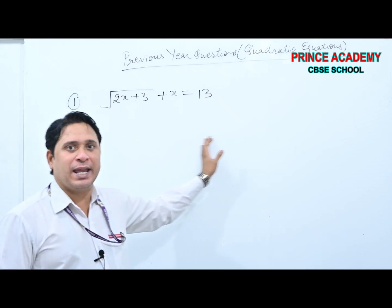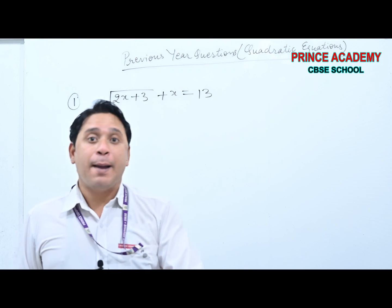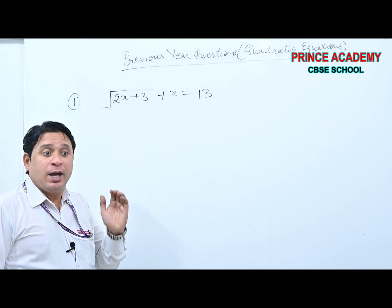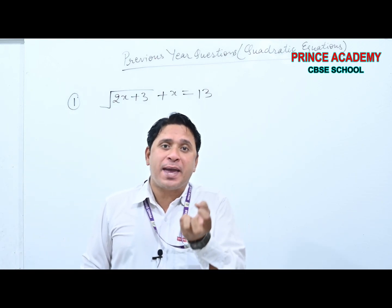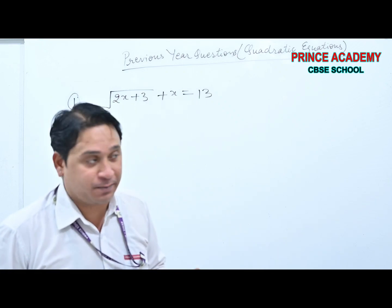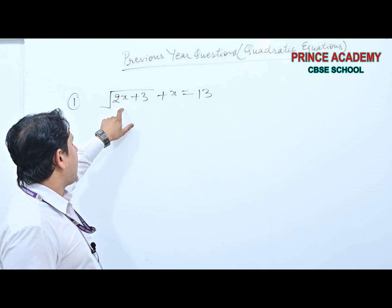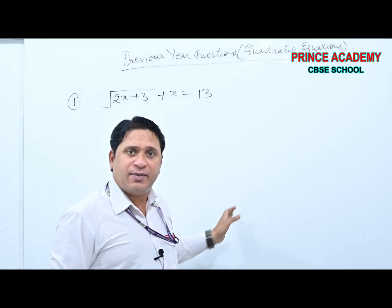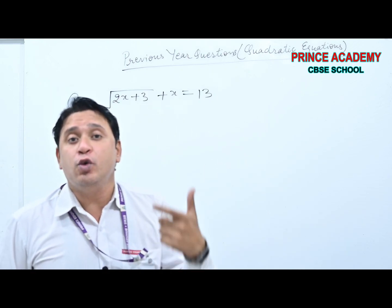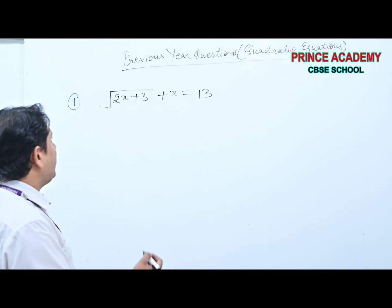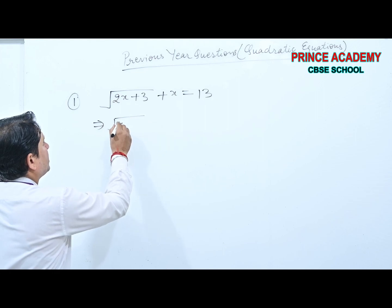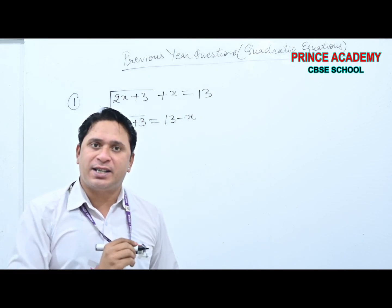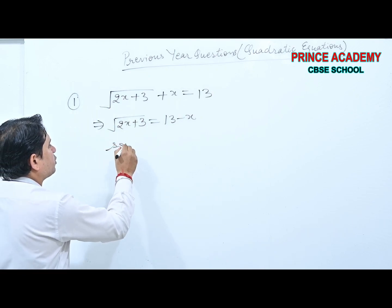Some students may say 'square both sides.' That's okay, but if we do that on the left side (A plus B whole square), we get 2AB with a root again, requiring another squaring. Why do extra work? Instead, shift x to the right side first. Then squaring both sides: root(2x+3) whole square equals (13−x) whole square.